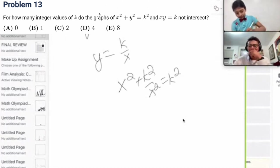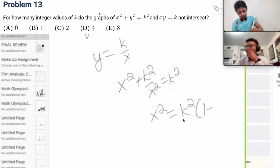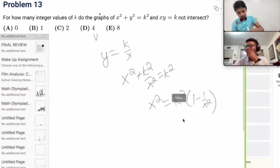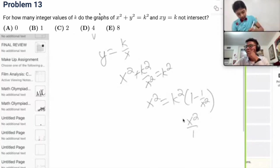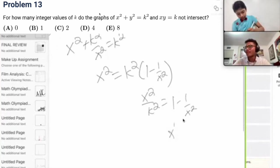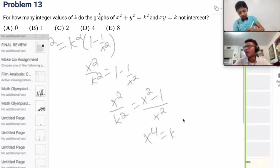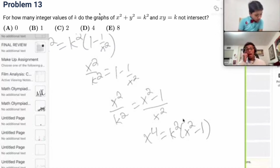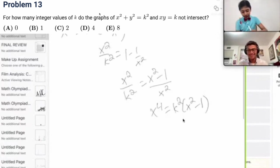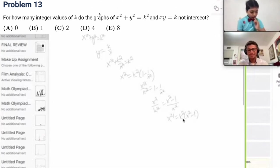Well, okay, let's see. I guess we can say x squared equals k squared times 1 minus 1 over x squared. So, x squared over k squared equals 1 minus 1 over x squared, which I could say is x squared minus 1 over x squared. So, for how many integral values of k does this have no solution?